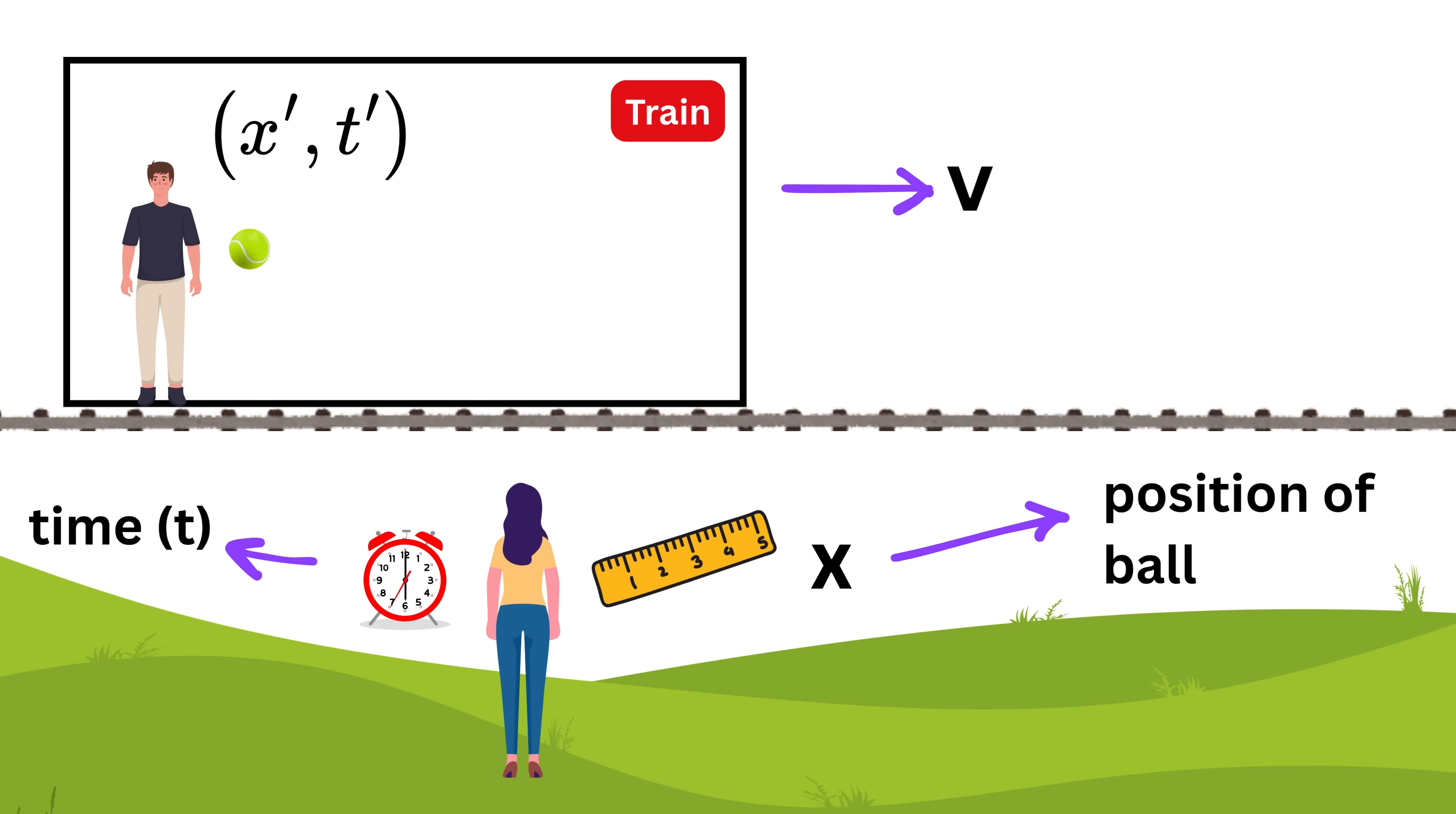Bob does the same in the train and calls his measured position x prime and his time t prime. So now the question is, how do we convert between what Alice measures and what Bob measures?